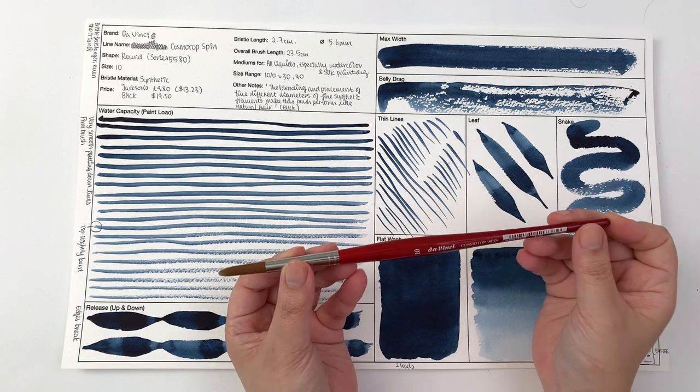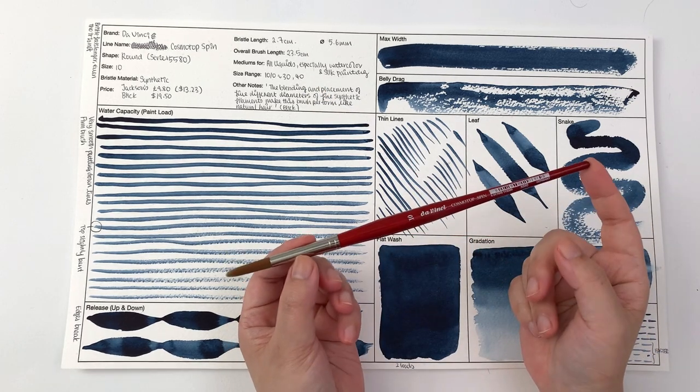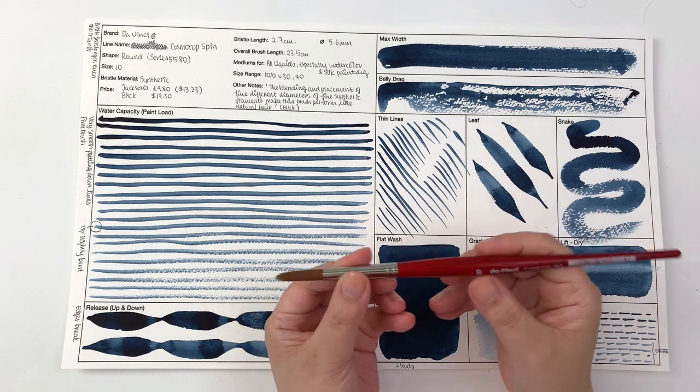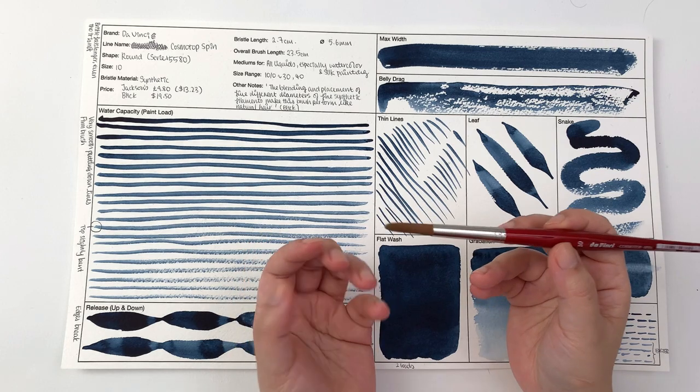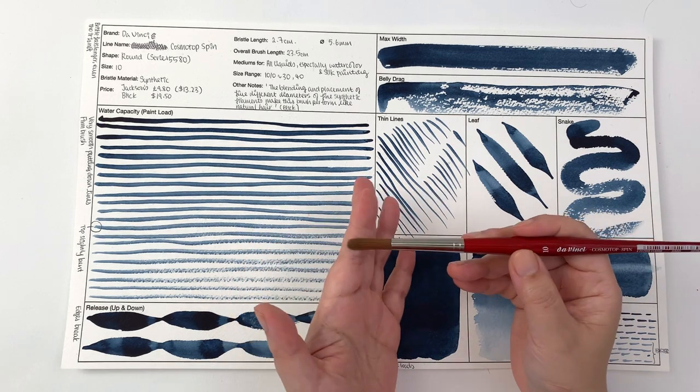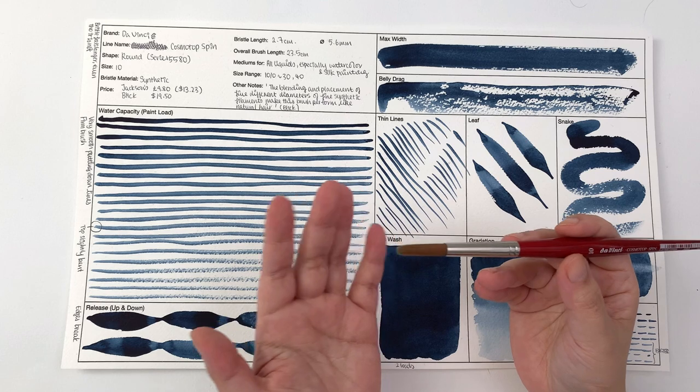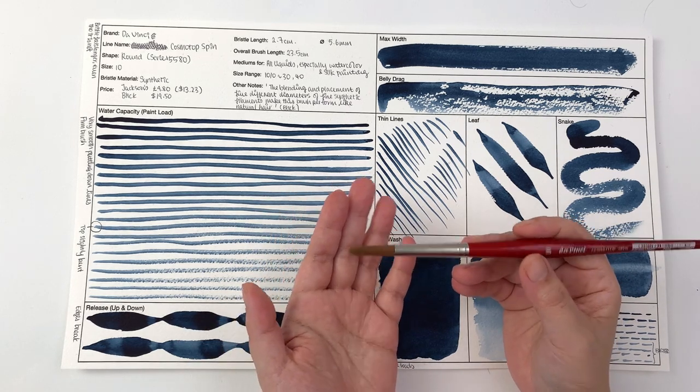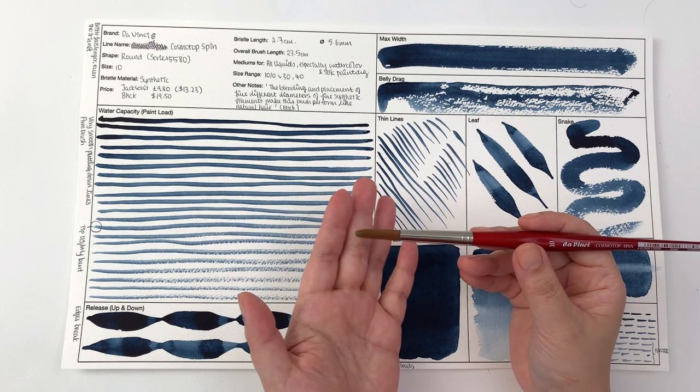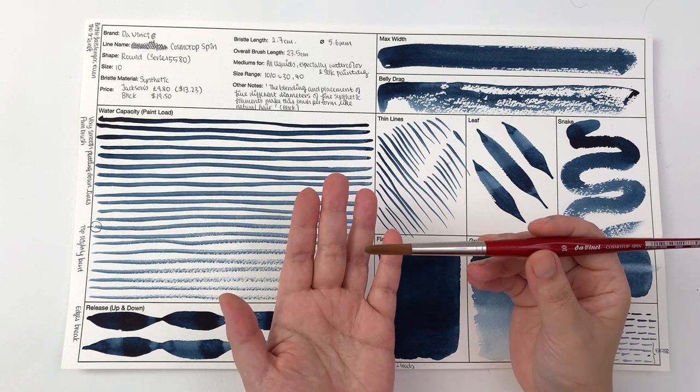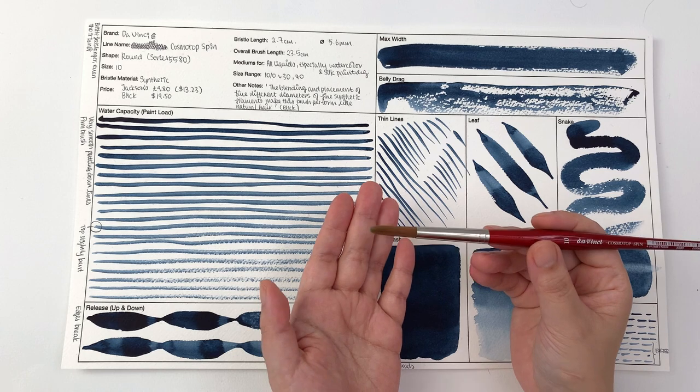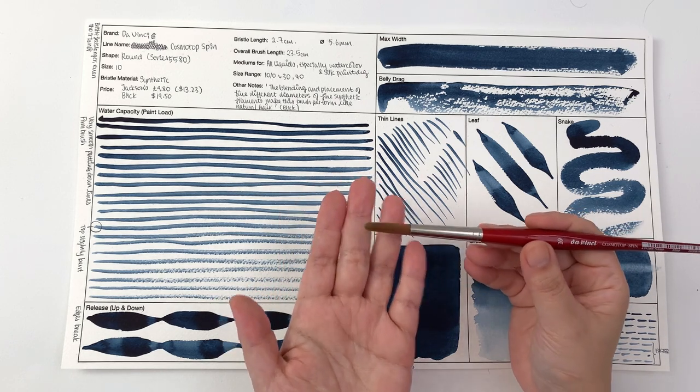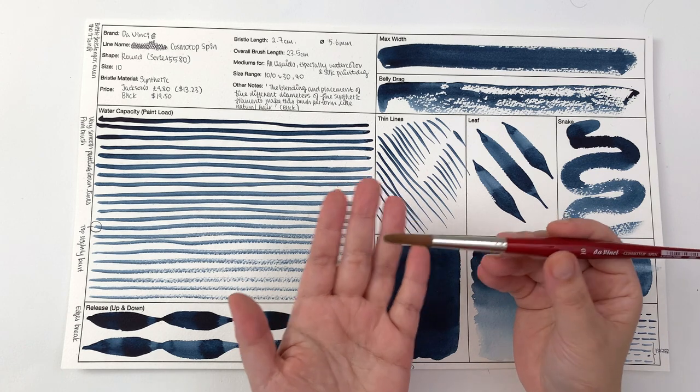The overall brush size is pretty average at 23.5 centimeters. However the bristle feels thinner and longer, or they just feel longer when it's wet. It's not that it's any longer than other brushes, it's at 2.7 centimeters and most brushes come in about that, but it is at 5.6 millimeter diameter.